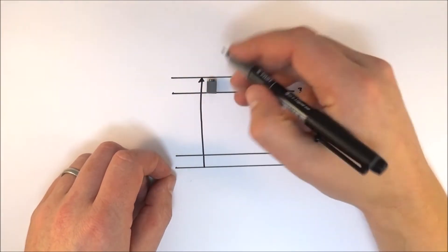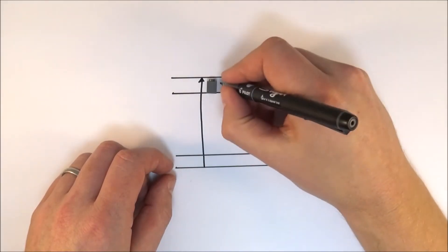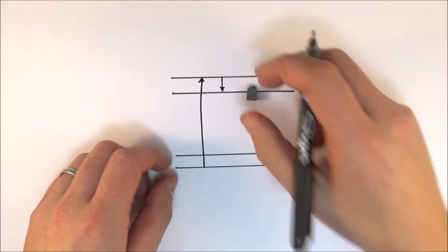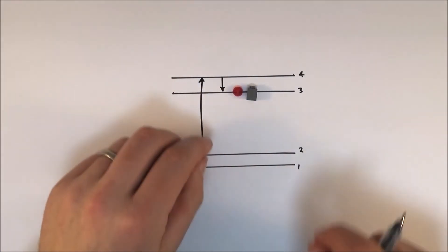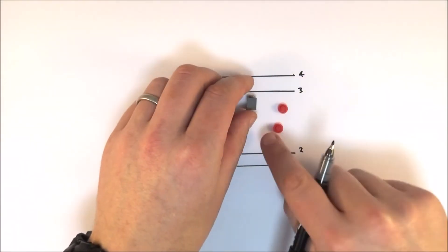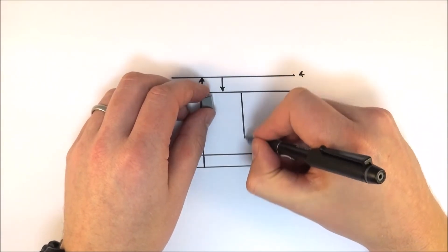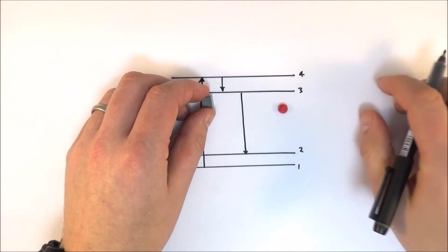It then drops back down immediately, down to energy level three. Now, what happens then is this, again, is our metastable phase. A photon comes in, causes a stimulated emission, which means that two photons come out of the other side, as it drops from level three down to level two.